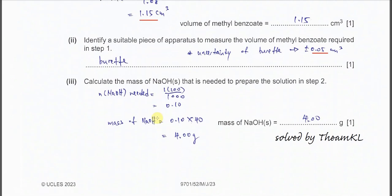Part A3: Calculate the mass of sodium hydroxide needed to prepare the solution. We need 100 cm³ of 1 mol/dm³ NaOH, so we calculate the moles needed first: 0.10 mol. Then we use moles times molar mass to get the mass. The mass of sodium hydroxide needed is 4 grams.